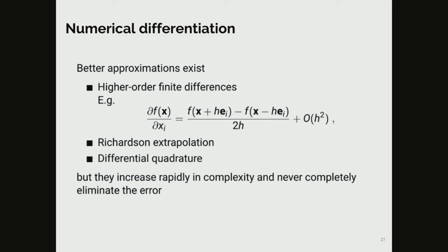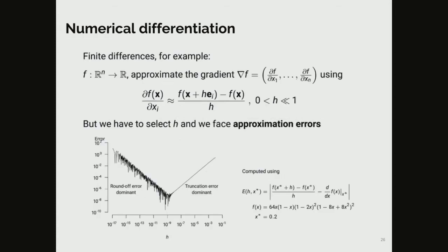Another problem with numerical differentiation is performance: for computing a gradient you have to evaluate the formula as many times as you have input variables. If you have a scalar function of n inputs you will have to compute the function forward n times to compute the full gradient — so this is also out of the question for large models.